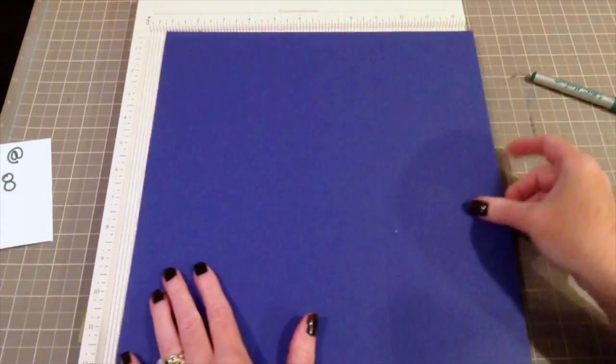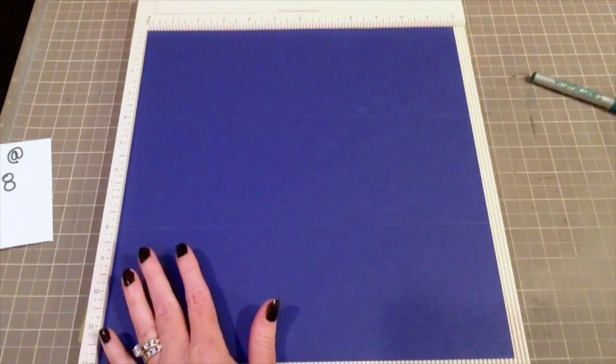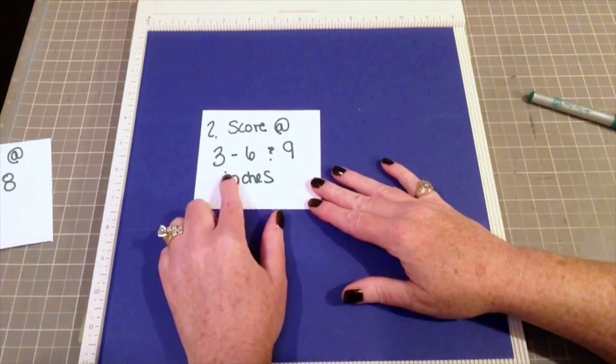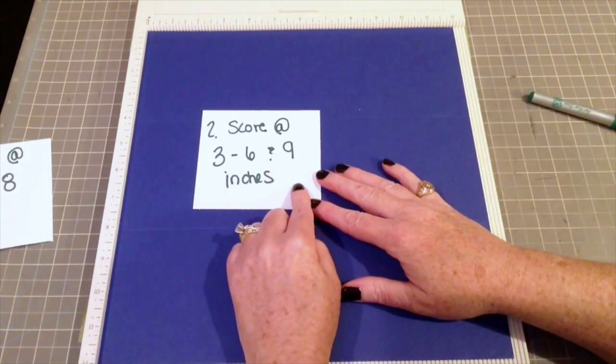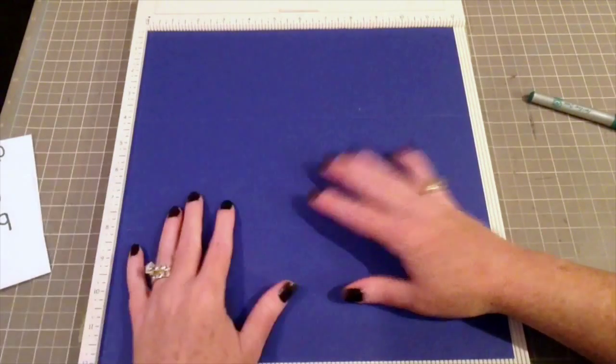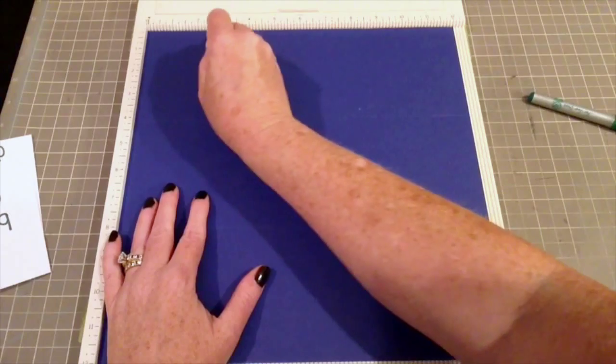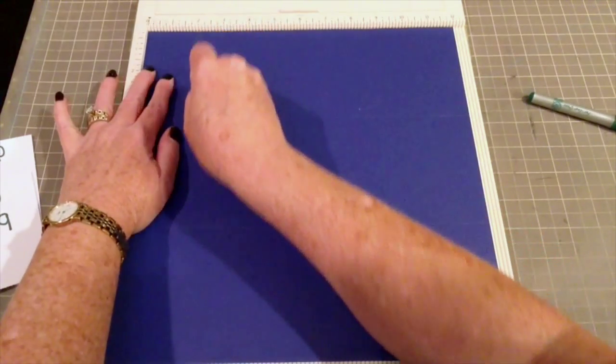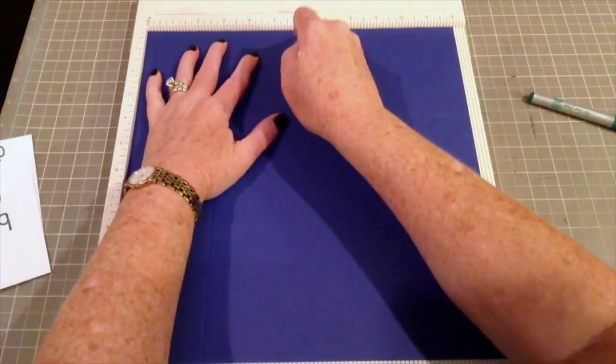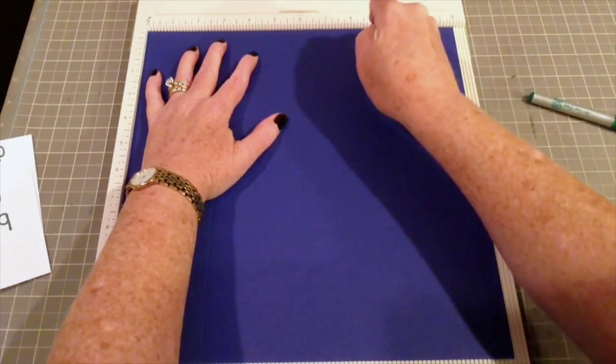Now you turn the paper counterclockwise once, and then you're going to score three lines at the 3, 6, and 9-inch mark. So again, you're going to use that bone folder, start up at the top, and you go from the 3, then you go to the 6, and then you go to the 9-inch mark.